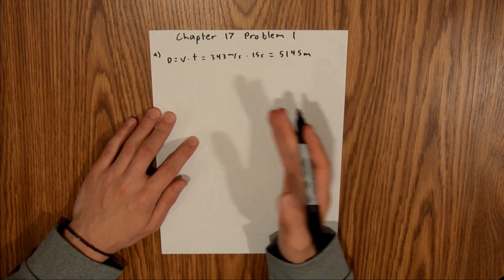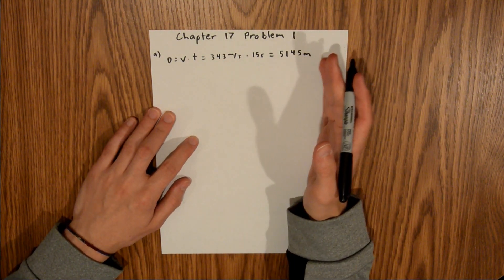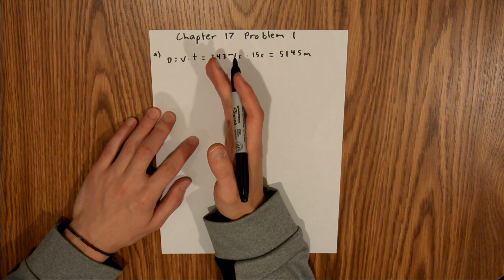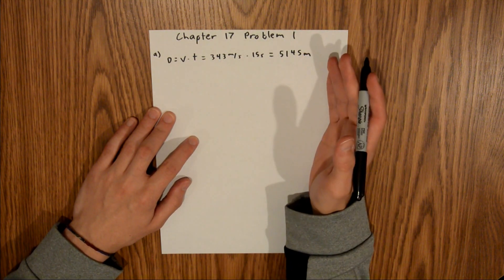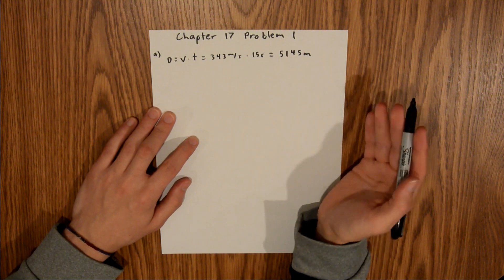The total distance is from door to wall to door. We want to find the distance from door to wall, so we need to take this total distance and cut it in half.